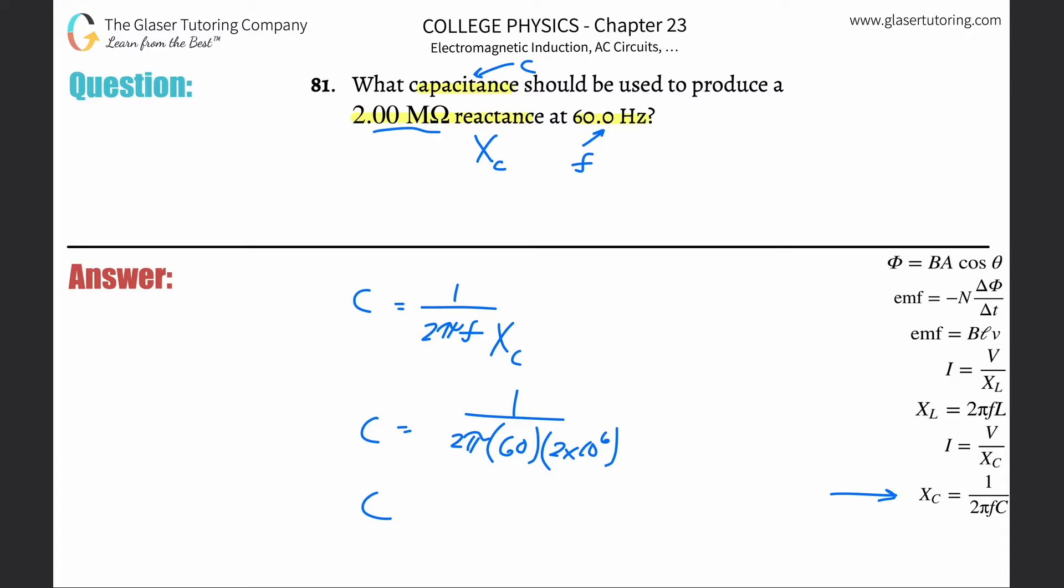So this is 2 times 10 to the positive 6 ohms. So basically, inductive reactance and capacitive reactance is a type of resistance. And we deal with these resistances, so to speak, in RLC circuits. Resistance, inductor, and capacitance circuits.